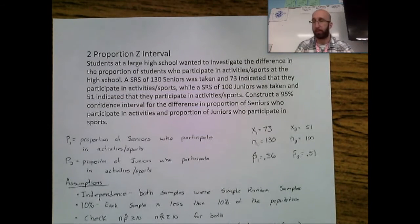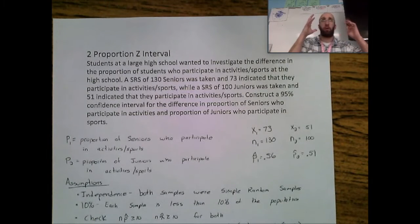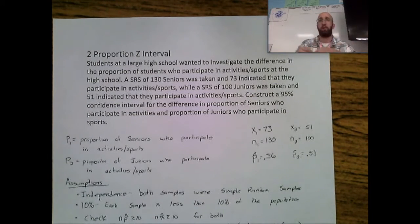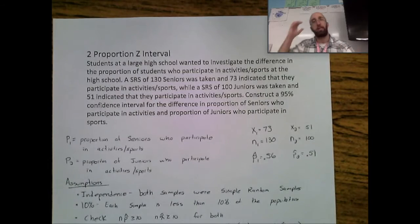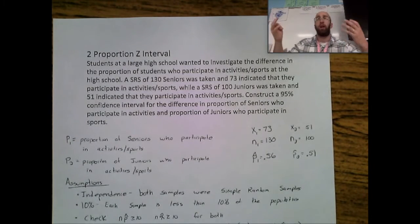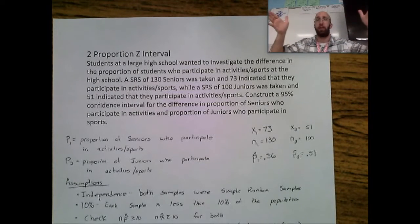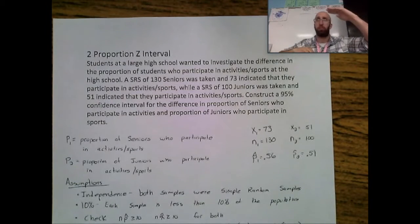The idea is we're going to find the proportion of seniors who do these activities and the proportion of juniors who do these activities, and find the difference between the two — how big is that gap? We're estimating for the entire population using two samples, trying to estimate how big the difference is between seniors who participate and juniors who participate.